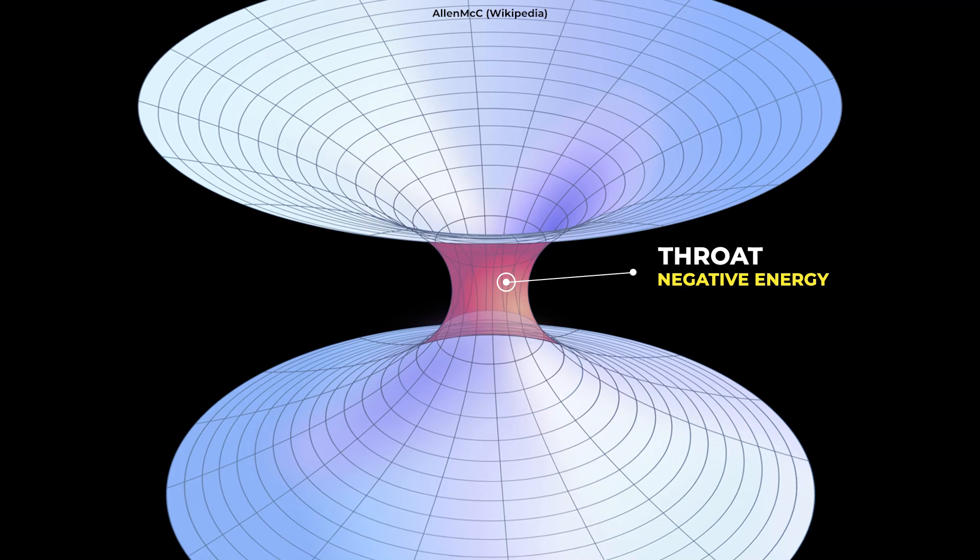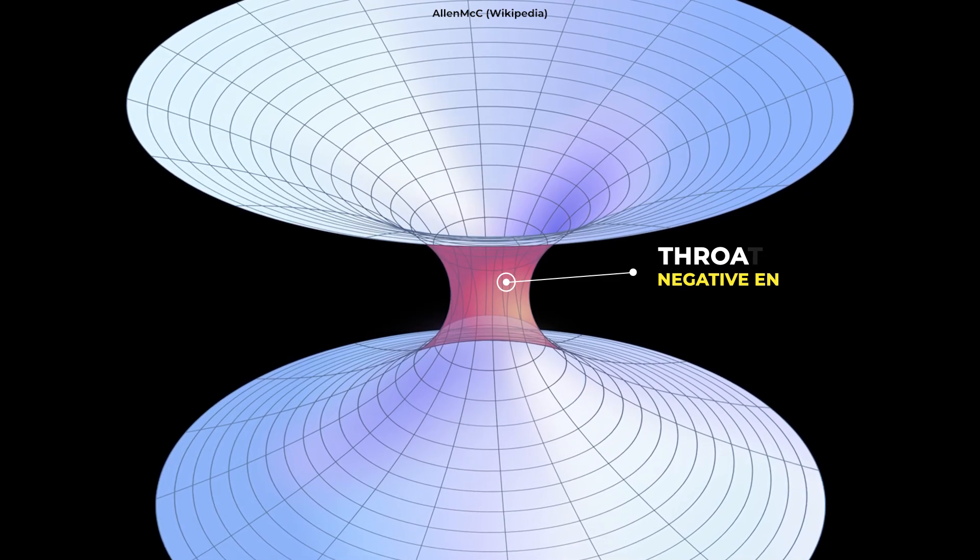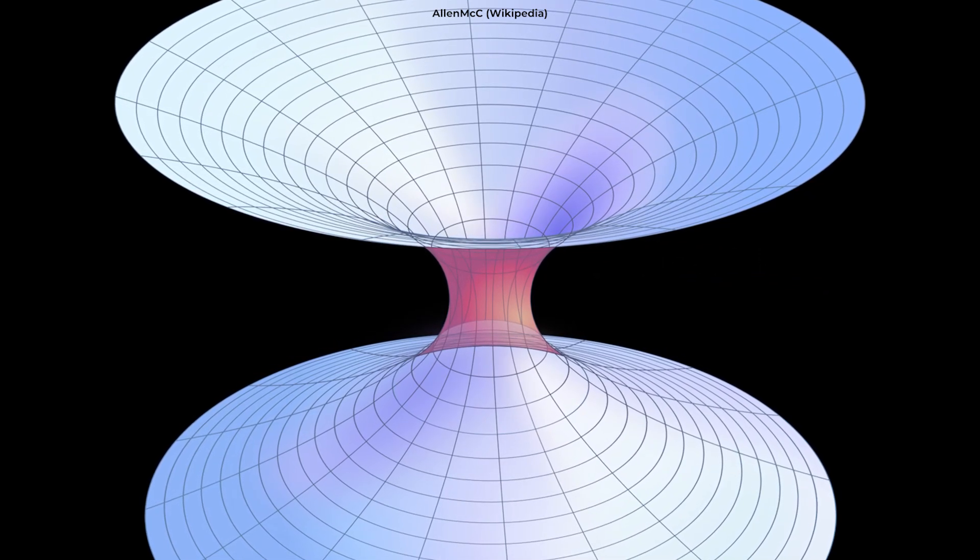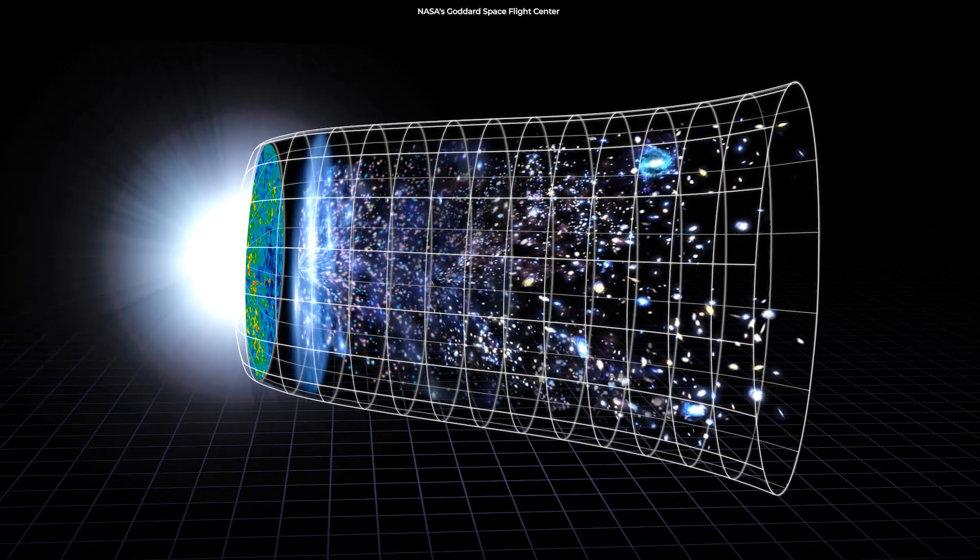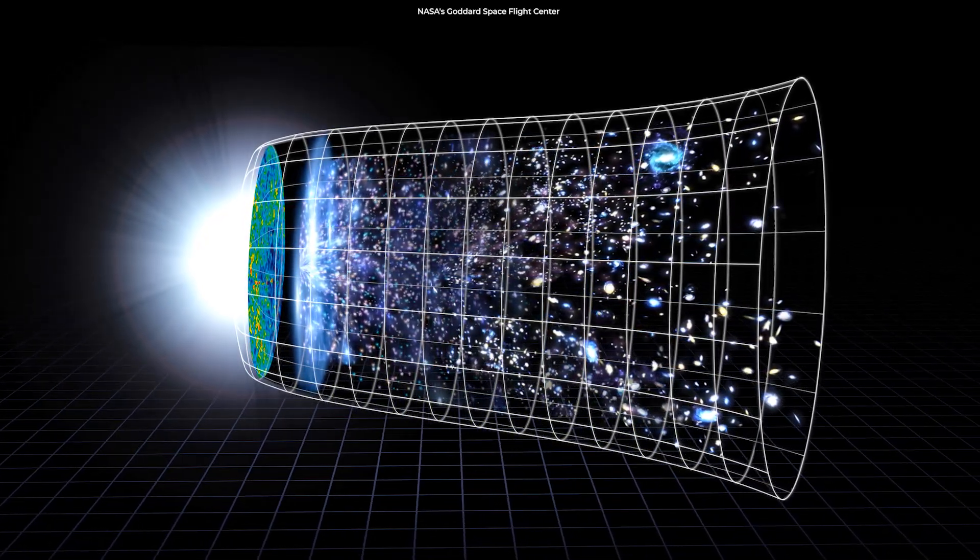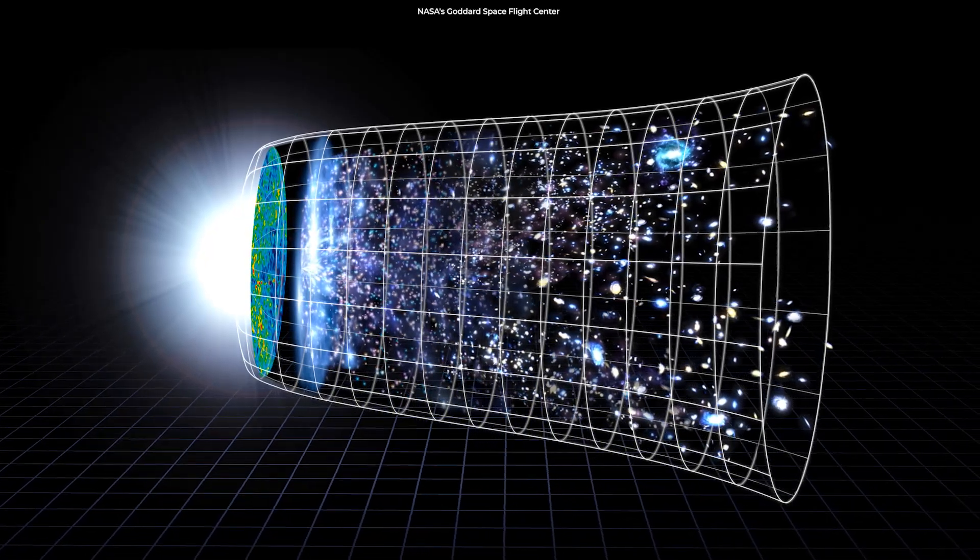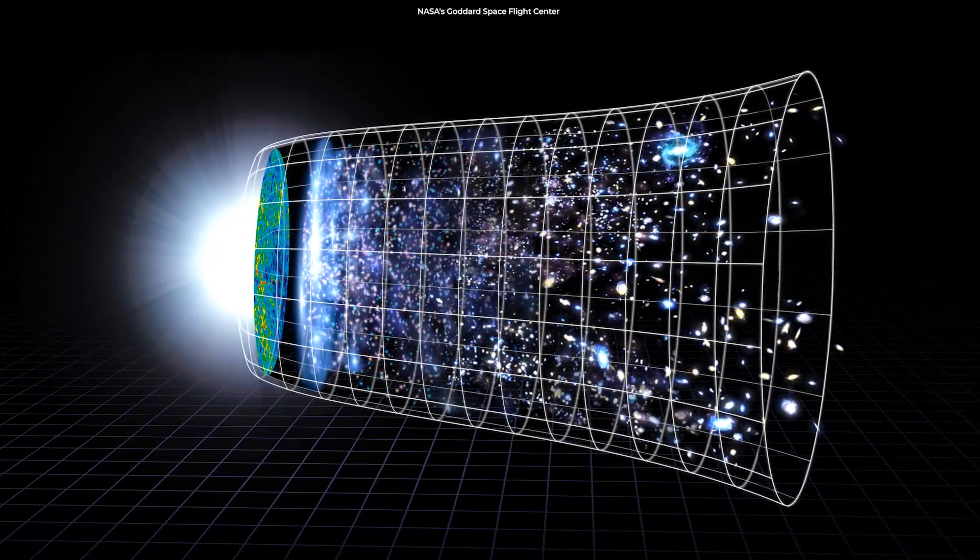Sounds like sci-fi? We know that negative energy exists. Small amounts have already been produced in the lab. We also know that negative energy is behind the universe's accelerated expansion. So, nature may have found a way to make wormholes.